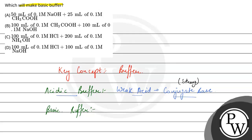Similarly, a basic buffer is a mixture of weak base plus its conjugate acid. Because the base is weak, the acid is strong. So a basic buffer is a mixture of weak base plus strong acid.